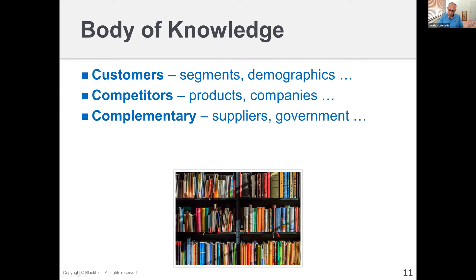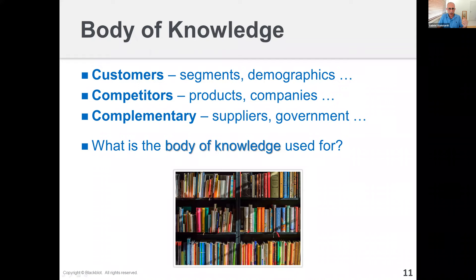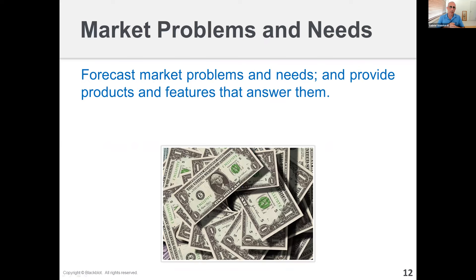What do we need this body of knowledge and market expertise for? Obviously to make product and business decisions, but more than that — we want the body of knowledge to help us look into the future, to forecast market problems and needs before they materialize, before customers recognize them, and begin developing products, services, and features for these future needs. So when they materialize, we will already be there with a solution, answering the need and beating the competition. This is often how you become first to market, the leader, and make money.